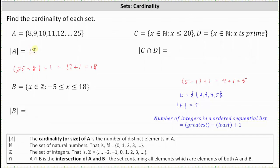Another way we could think of this is the number of elements from 11 to 25 is 15, and then we have three more: 8, 9, and 10. 15 plus 3 is 18. Whichever way, the cardinality is 18.